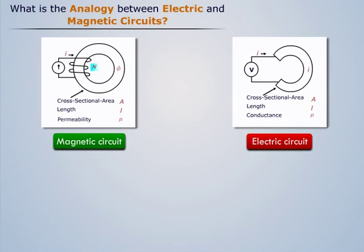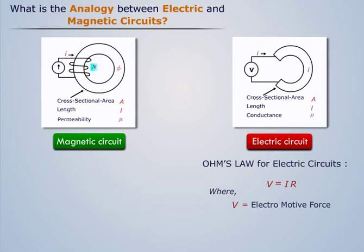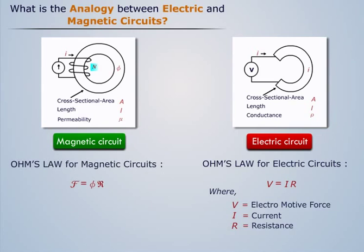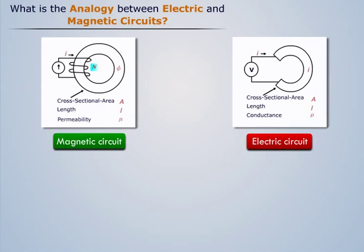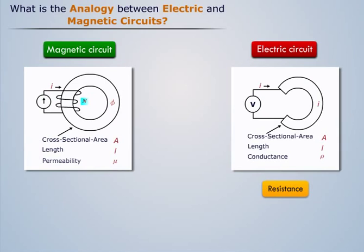In an electric circuit, Ohm's law is expressed as V = IR, where V represents the voltage, I the current, and R the resistance. Similarly, in a magnetic circuit, Ohm's law can be expressed as F = Φ × R, where F represents the magnetomotive force, Φ the magnetic flux, and R the reluctance.